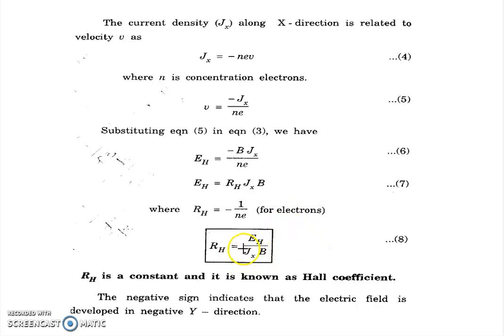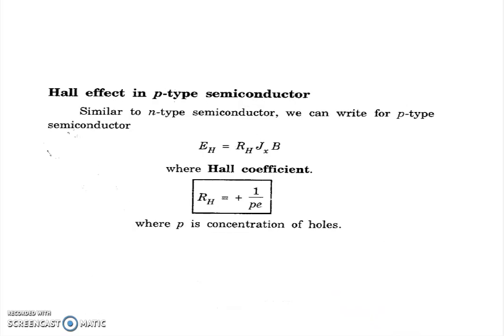The Hall coefficient RH is defined as EH divided by JX times B. RH is a constant. For a p-type semiconductor, the Hall field EH equals RH times JX times B.